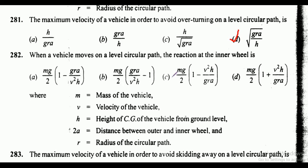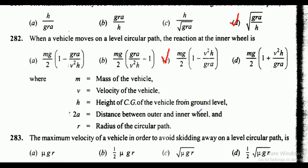Question 282: when a vehicle moves on a level circular path, the reaction at the inner wheel. Variables: m equals mass of the vehicle, v equals velocity, h equals height of CG from ground, a equals distance between outer and inner wheel, r equals radius of circular path. The correct answer is option C: mg upon 2 into bracket 1 minus v square into h upon gra.